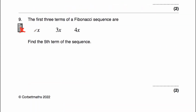Let's have a look at question number 9. We've got some algebraic terms here, and we've been told the first three terms of a Fibonacci sequence are x, 3x, and 4x. That makes sense because x plus 3x is 4x. Let's find the fourth term: 3x plus 4x would be 7x. And then finally to get the fifth term, we need to add 4x and 7x, which would be 11x. So the fifth term would be 11x.